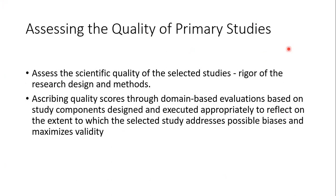The next step is assessing the quality of the selected study. When we talk about scientific quality, it refers to the rigor of the research design and methodology — whether the study was an open-label study, double-blind, single-blind, placebo-controlled, non-inferiority, or superiority trial, and what methodology was employed. You need to ascribe quality scores through domain-based evaluation, assessing study components designed and executed appropriately to reflect the extent to which the selected study addresses possible biases and maximizes validity.